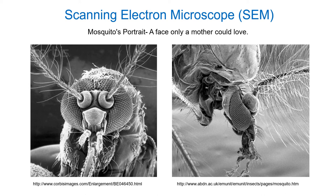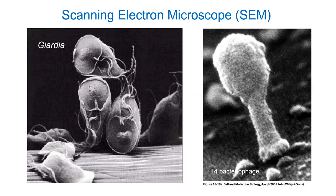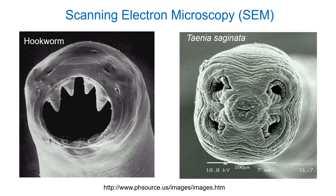With the scanning electron microscope, you can see remarkable surface detail: here we're seeing the face of a mosquito from the front and side. You can see things quite a bit smaller too — Giardia and a T4 bacteriophage, which is a virus that infects bacteria. And some scarier examples: the face of a hookworm with teeth-like structures that grab onto the intestinal lining and make it bleed; and a tapeworm with suction cups that attach to the intestinal lining. Tapeworms don't draw blood — they use those suckers to stay put and feed on pre-digested food within the intestine.